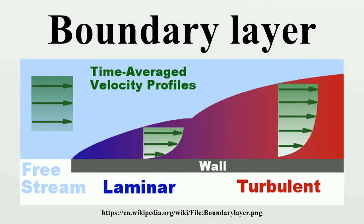Laminar boundary layers can be loosely classified according to their structure and the circumstances under which they are created. The thin shear layer which develops on an oscillating body is an example of a Stokes boundary layer, while the Blasius boundary layer refers to the well-known similarity solution near an attached flat plate held in an oncoming unidirectional flow. When a fluid rotates and viscous forces are balanced by the Coriolis effect, an Ekman layer forms. In the theory of heat transfer, a thermal boundary layer occurs.